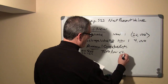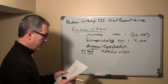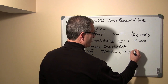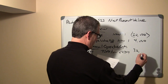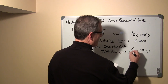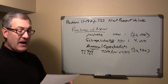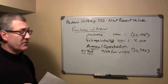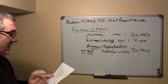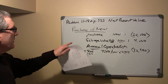Looking up sixteen percent over eight periods in the present value of an annuity table gives a factor of 4.344. The present value of those disbursements is thirty-two thousand five hundred and eighty dollars — shown in brackets as an outflow. Remember, it's not eight times seventy-five hundred; that would be the future value.